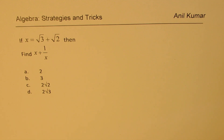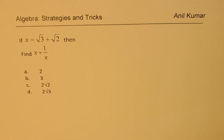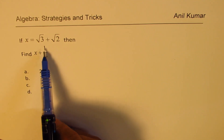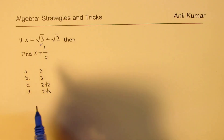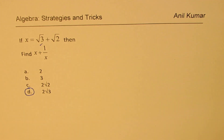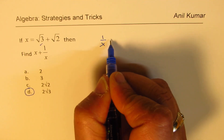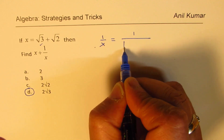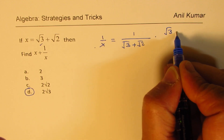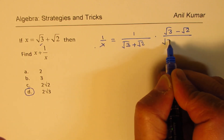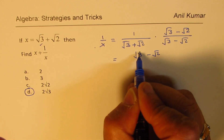Here is our very first question. As you notice, 3 is 2 plus 1, so it works — we'll apply our strategy. The question is: what is x plus 1 over x? Clearly, the answer should be twice the first term, so we get 2 square root 3. Let's verify: 1 over x is 1 over (square root 3 plus square root 2). We rationalize by multiplying and dividing by its conjugate.